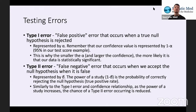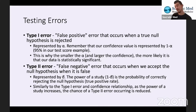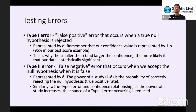A little bit more on testing errors. You've probably heard of false positives and false negatives — this has been especially prominent in mainstream media regarding COVID testing. We look at the false positive and false negative rates. Type one error is also known as a false positive error, and it occurs when a true null hypothesis is rejected.